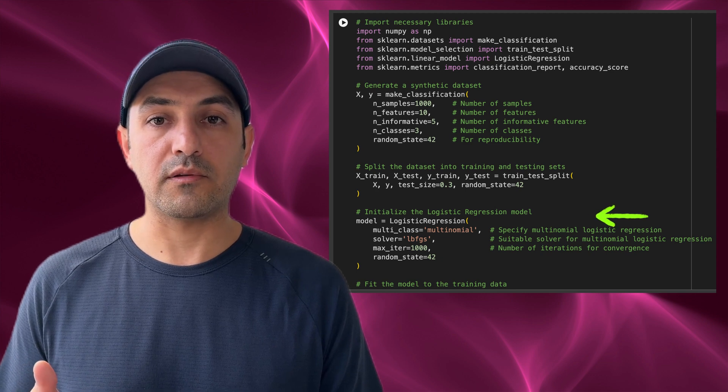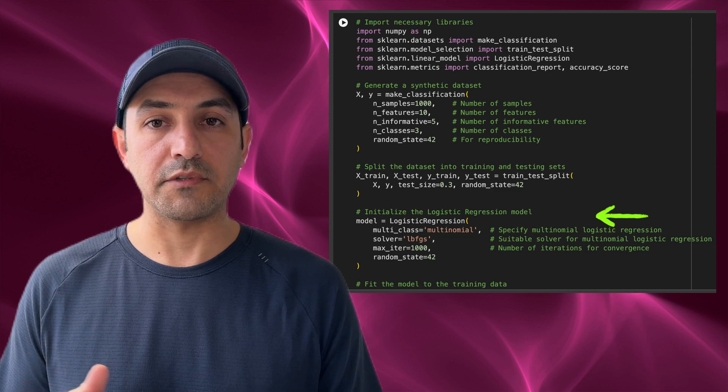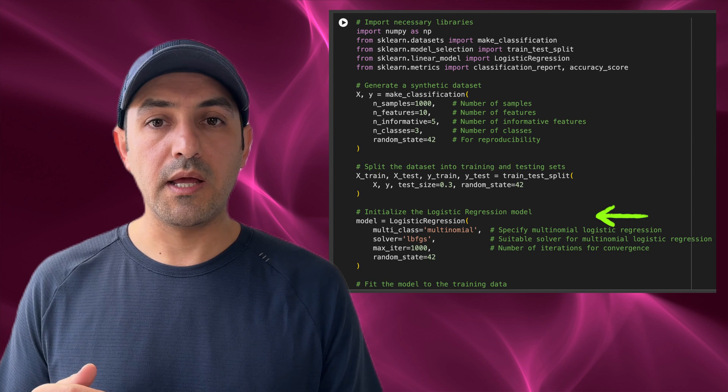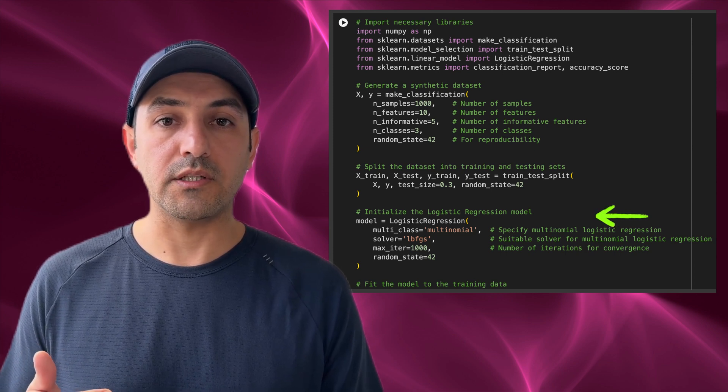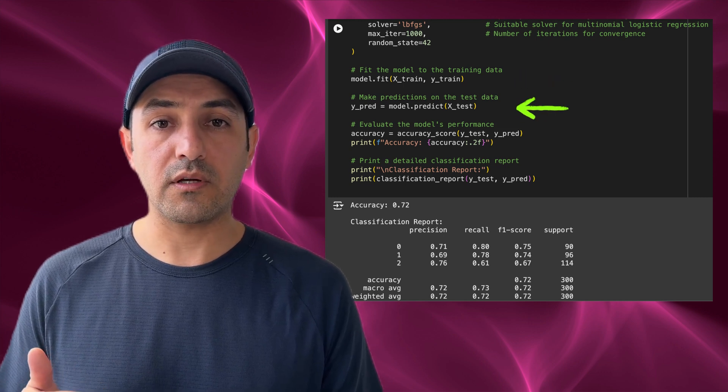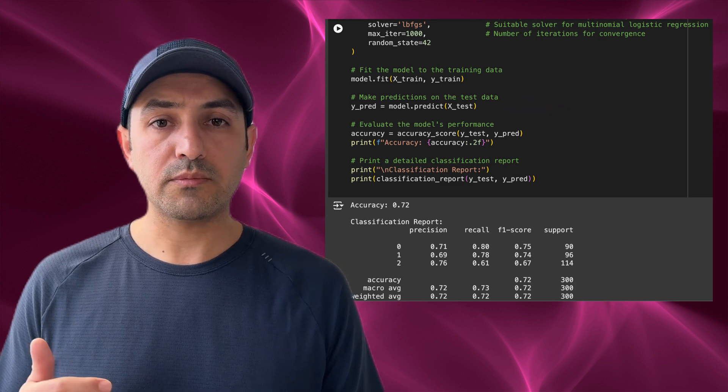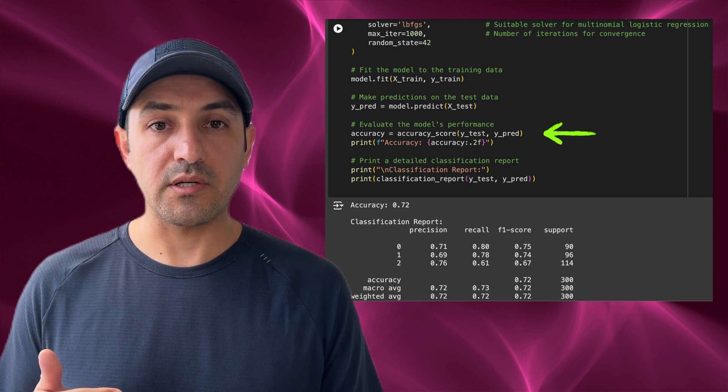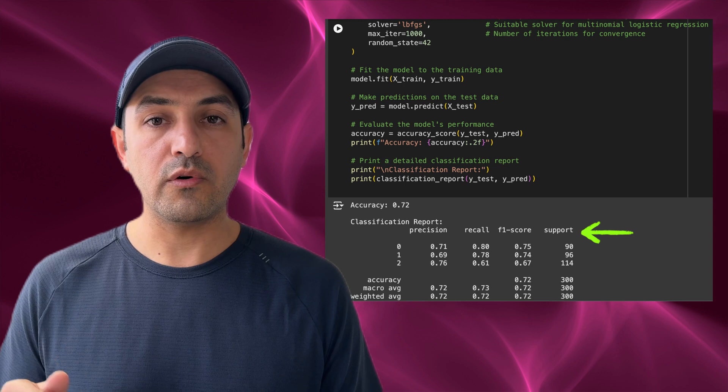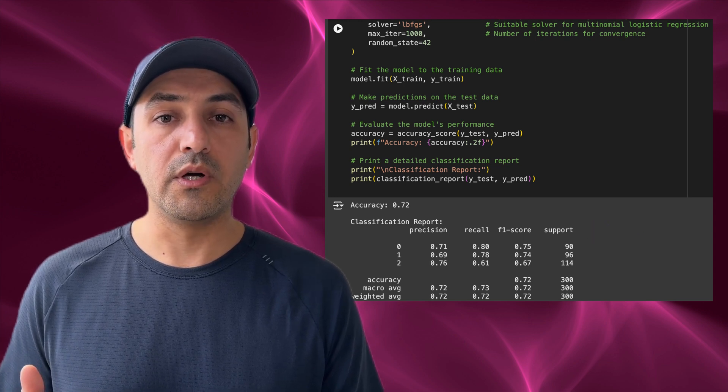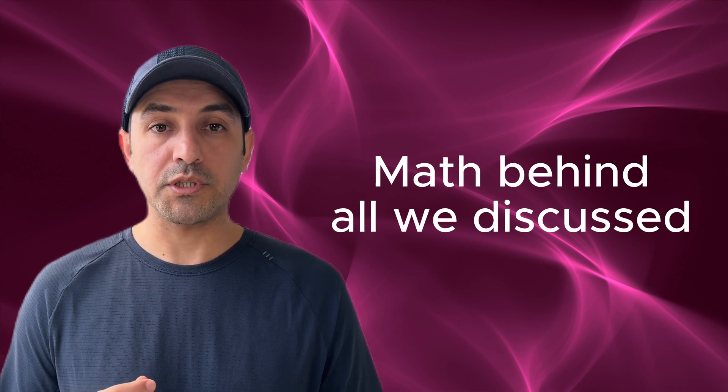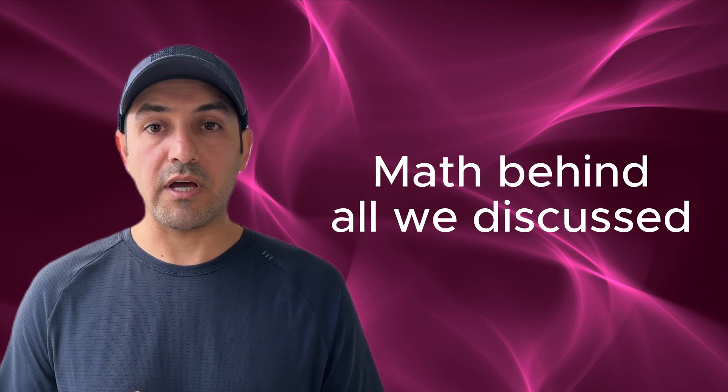The solver equals lbfgs parameter specifies the algorithm for minimizing the errors, the loss function, and max_iter equals 1000 ensures the model has enough iterations to converge. Next, the model is trained using the fit method on the training data. Once trained, it predicts the target labels for the test data using the predict method. The model's performance is assessed by calculating its accuracy and generating a detailed classification report. These metrics help evaluate how well the model classifies unseen data. I won't go over this report in this video as it takes one entire video that I plan to make in the future.